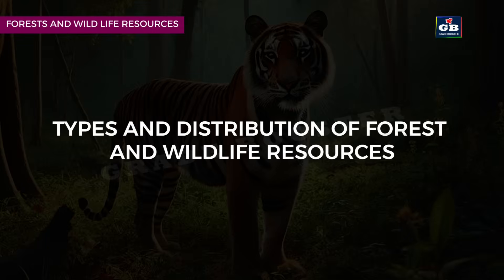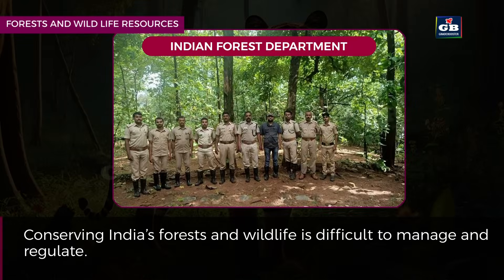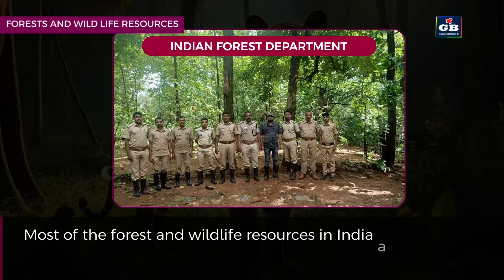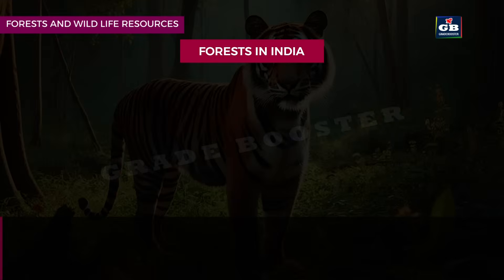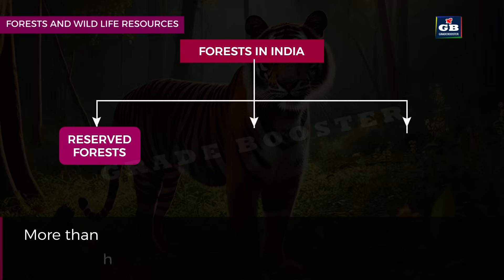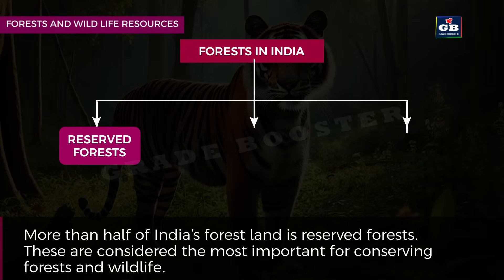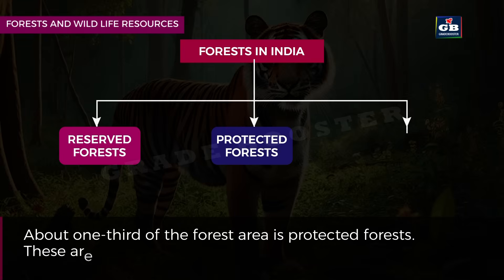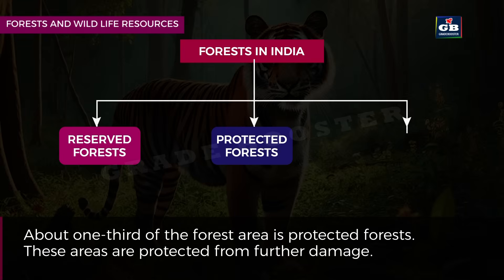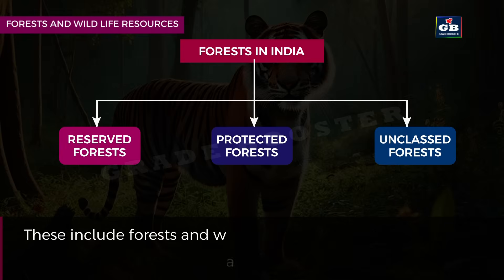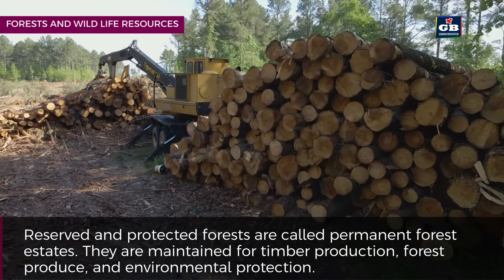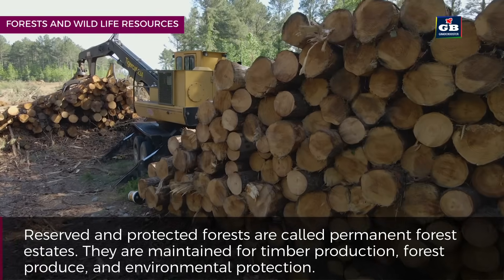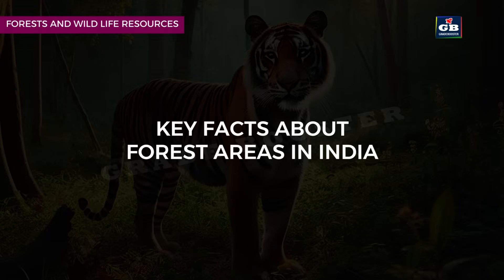Types and distribution of forest and wildlife resources. Conserving India's forests and wildlife is difficult to manage and regulate. Most forest and wildlife resources in India are owned or managed by the government through the forest department. Forests in India are divided into three main categories: 1. Reserved forests — more than half of India's forest land, considered most important for conservation. 2. Protected forests — about one third of the forest area, protected from further damage. 3. Unclassed forests — forests and wastelands owned by the government, private individuals or communities. Reserved and protected forests are called permanent forest estates, maintained for timber production, forest produce and environmental protection.